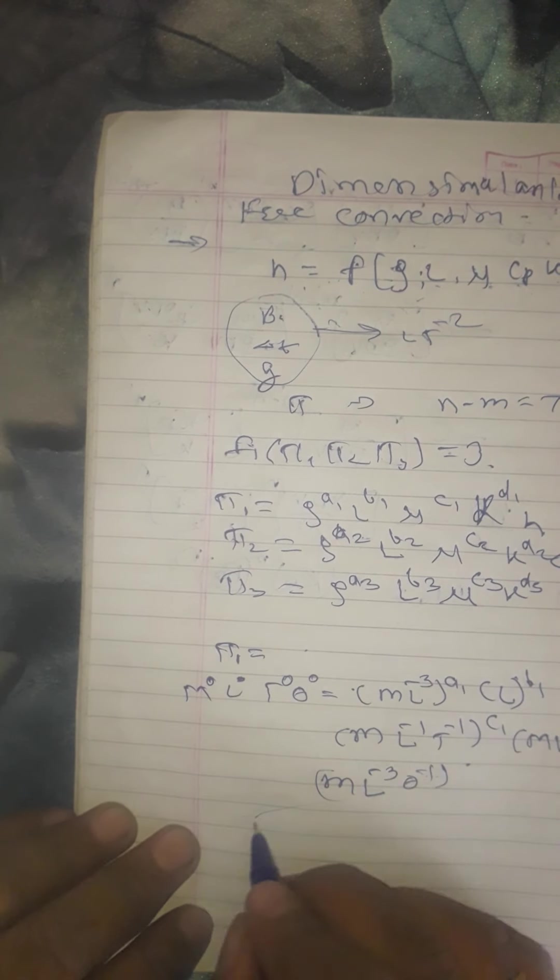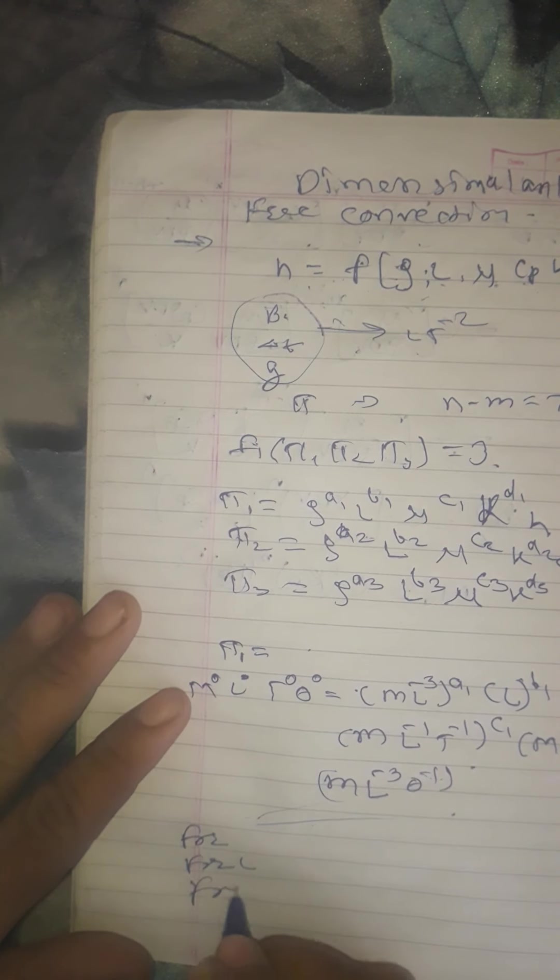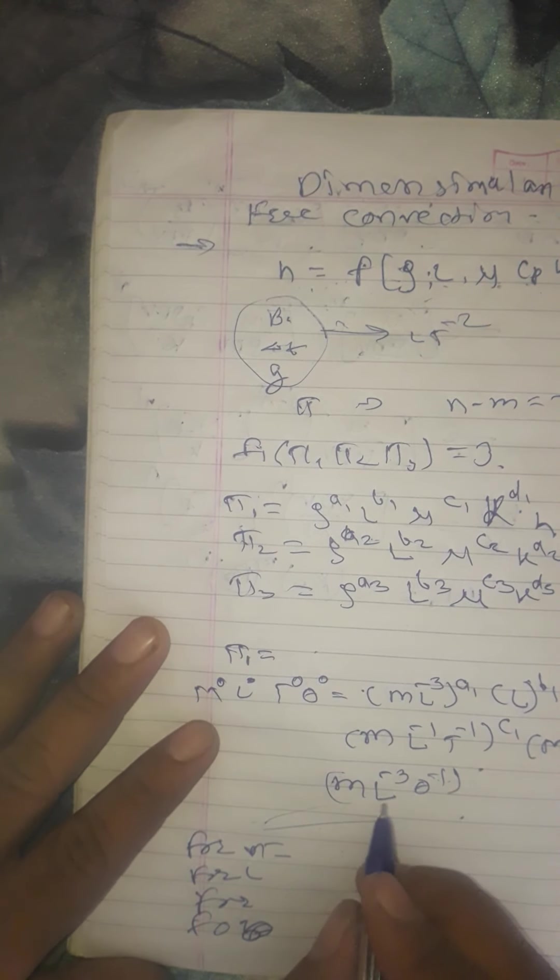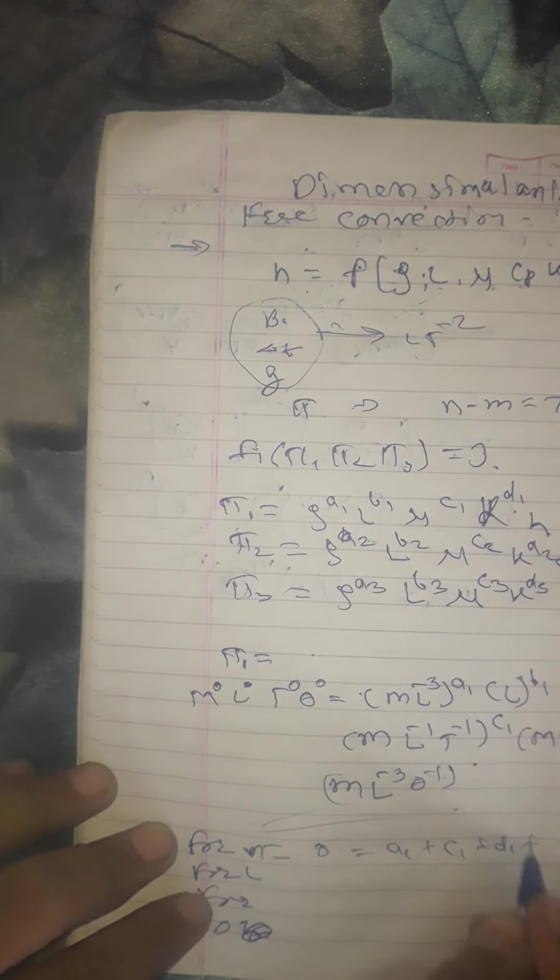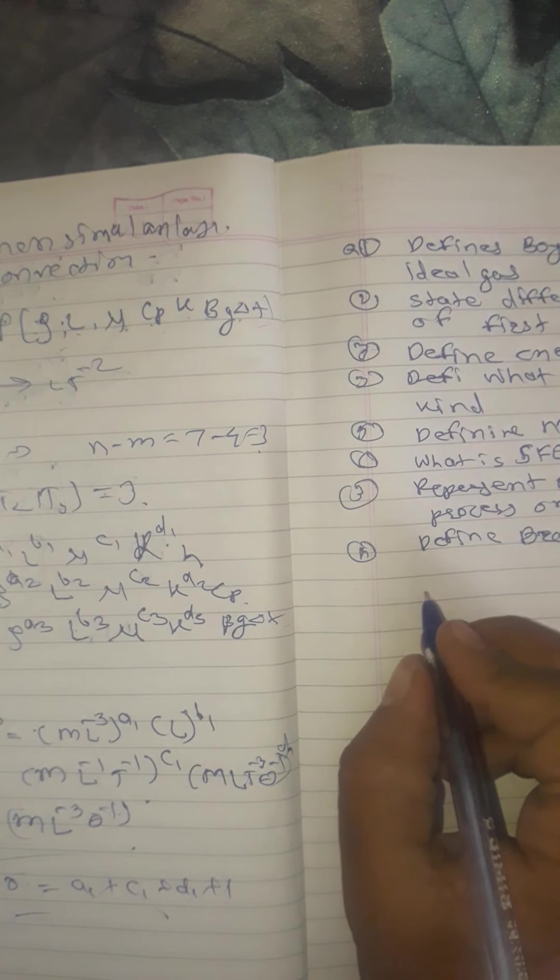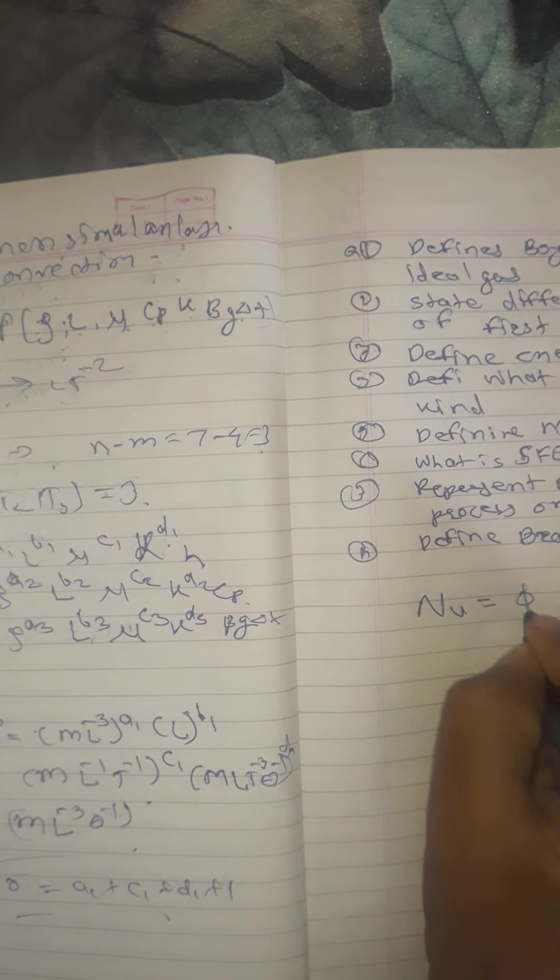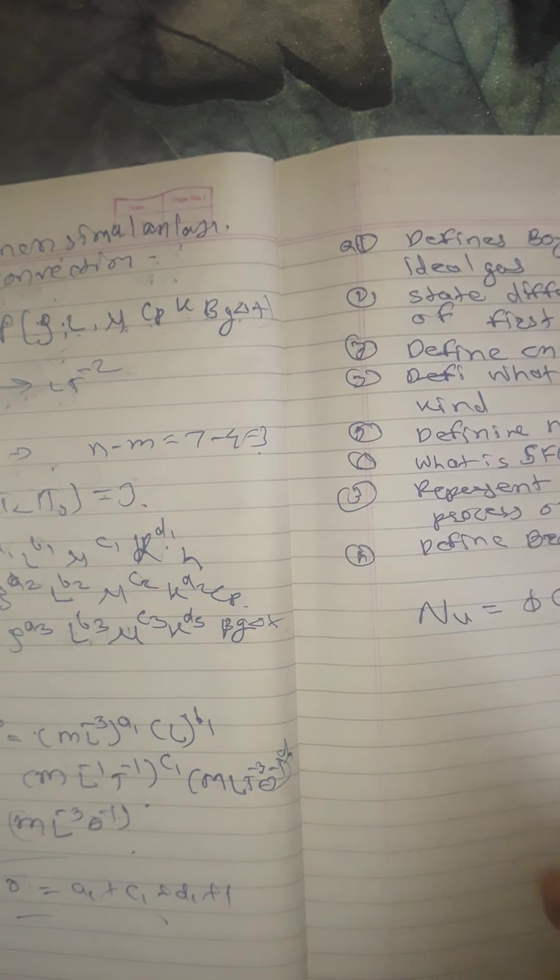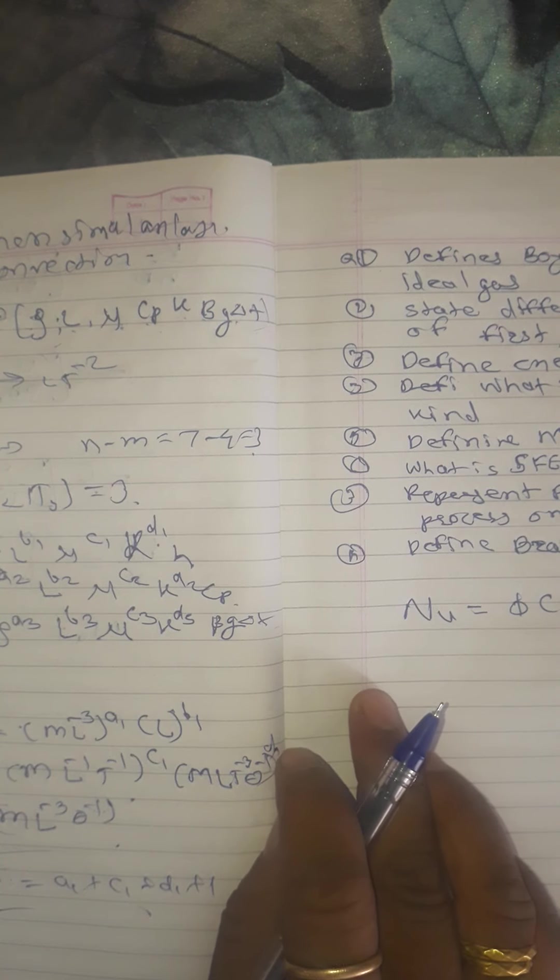So we have to find out the values of each for M, for L, for t, for theta. For M value, 0 equals A1 plus c1 plus d1 plus 1. From this we have to find out the value and the final answer for this we got NU equals PR into GR, that is Grashof number and Prandtl number.